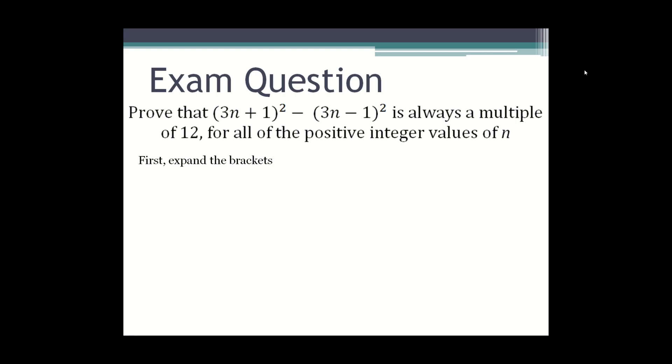So first you expand the brackets so you have (3n + 1)(3n + 1) minus (3n - 1)(3n - 1). Then you expand the brackets and you change the sign of the second square bracket.